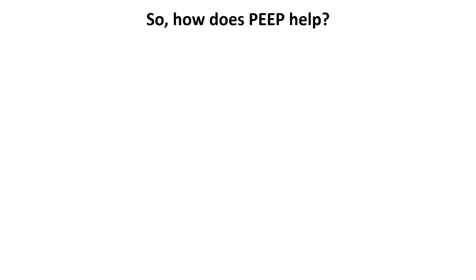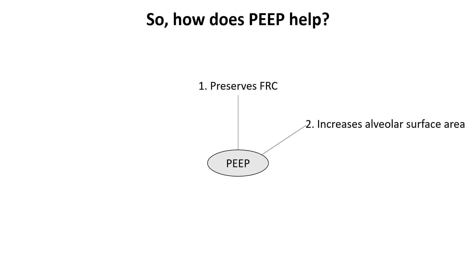By maintaining positive pressure at the end of exhalation, PEEP prevents alveolar collapse and preserves functional residual capacity, ensuring continuous gas exchange throughout the respiratory cycle. It also increases the surface area for gas exchange, improving oxygen transfer and reducing the need for high FiO2, which can lead to oxygen toxicity.